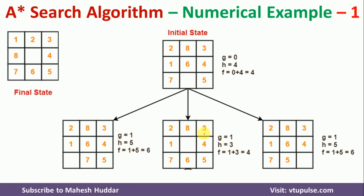For all 3 possibilities, we need to find g and h. All 3 are at depth 1, so g = 1. For the first move (7 left to right): comparing with the final state, 1, 2, 6, 8, and 7 are misplaced — h = 5, so f = 1 + 5 = 6. For the second move (6 top to bottom): 2, 8, and 1 are misplaced — h = 3, so f = 1 + 3 = 4.